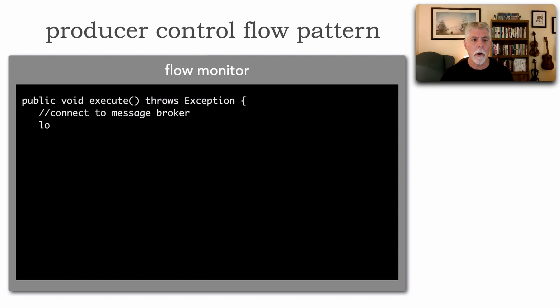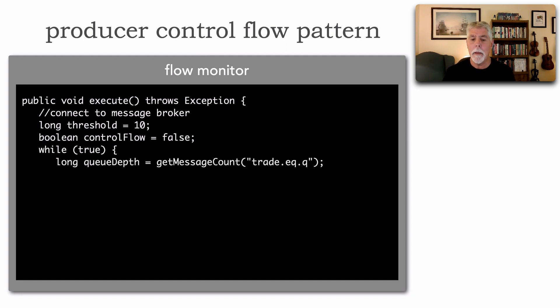So we connect to the message broker and we set a threshold. Again this is usually in the thousands but we're going to set it to 10 messages. Now we set a control flow flag that tells us we're either in control flow which means we've told producers to slow down or we're not. So I just continually keep getting message counts. I keep getting the message count and I check certain conditions. First if the queue depth ends up being greater than that threshold in our case 10 messages and we're not currently in control flow then I enable the control flow.